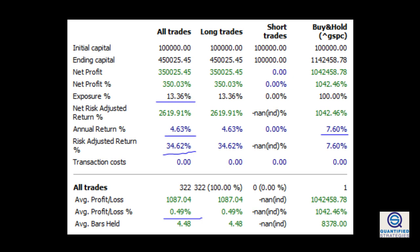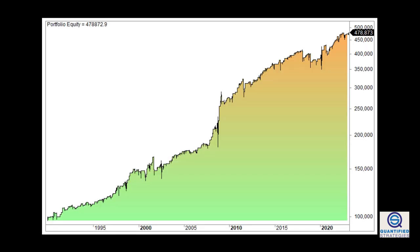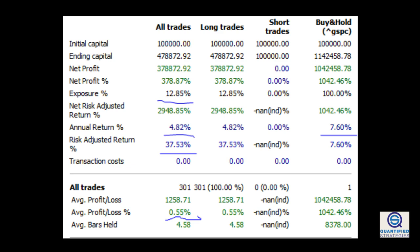Max drawdown for the strategy is only 22% compared to 55% for S&P 500. Let's jump to our third VIX strategy, which is a breakout strategy. Buy when VIX sets a new 20-day high and the 5-day RSI must be over 65. Exit when today's close is higher than yesterday's high. The strategy makes 0.55% per trade, which translates into 4.8% annual returns. The return is below buy and hold's 7.6% annual returns, but the strategy is invested only 12% of the time. Max drawdown for the strategy is only 22% compared to 55% for S&P 500.